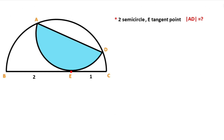First step: let's determine the center of the big semicircle. The radius of the big semicircle equals two plus one over two, so 1.5 units. Let's call point O the center of the big semicircle. That means this length must be equal to 0.5.